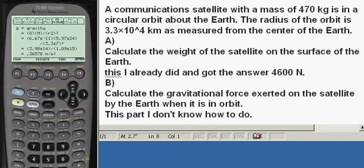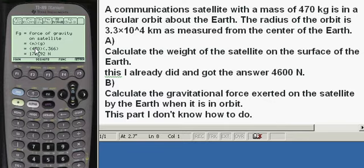0.36578 meters per second squared. And so the force of the gravity on the satellite is mg. Here's the mass of the satellite. And then here's the gravity at the satellite's location. And the force of gravity is 172 Newtons on that satellite. Pretty neat.